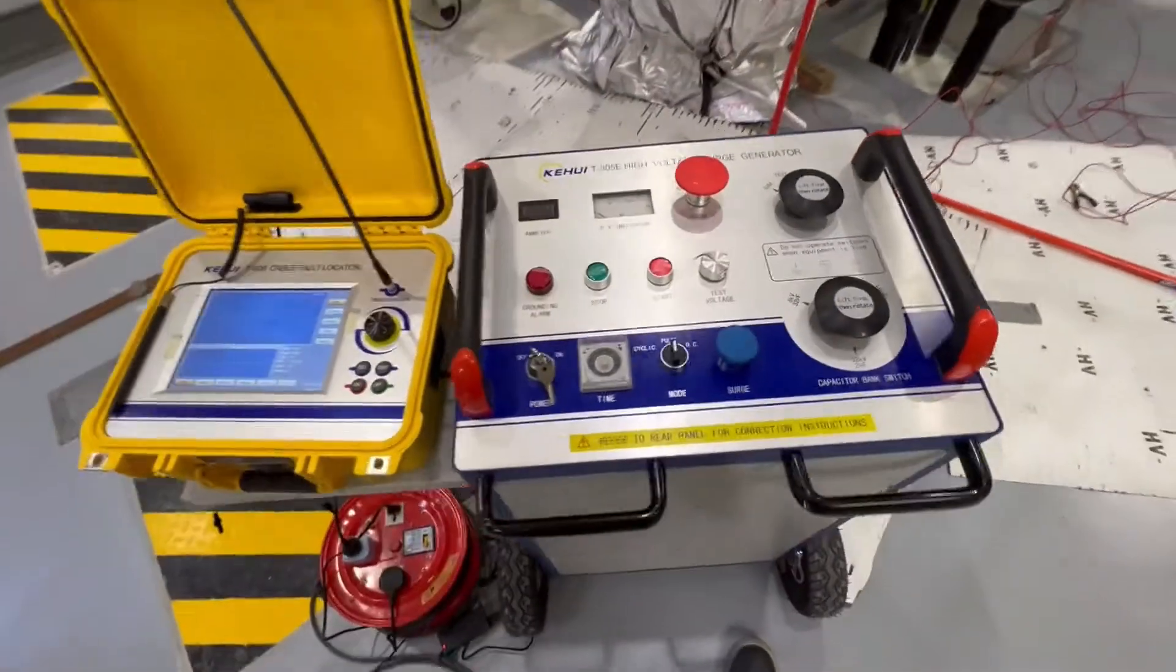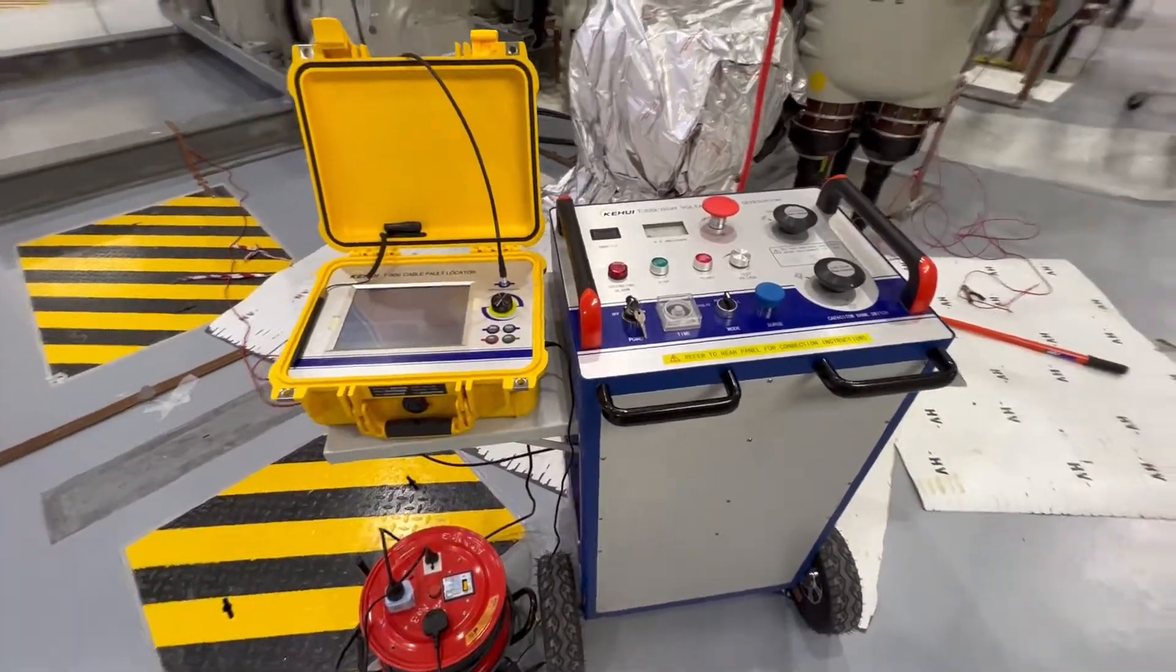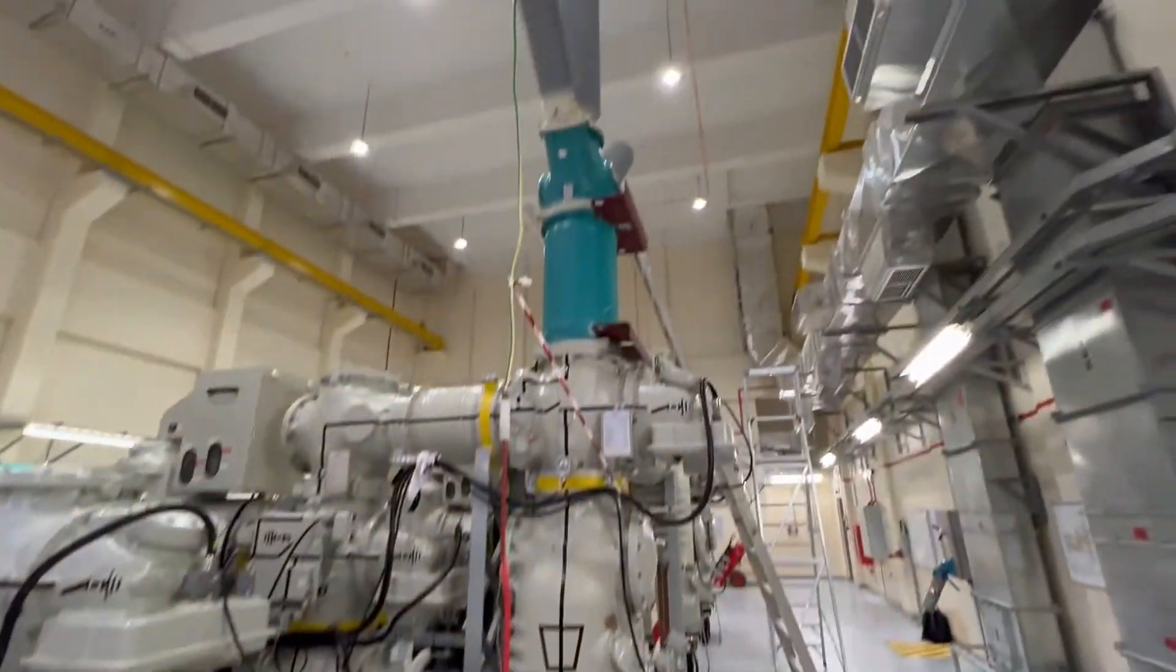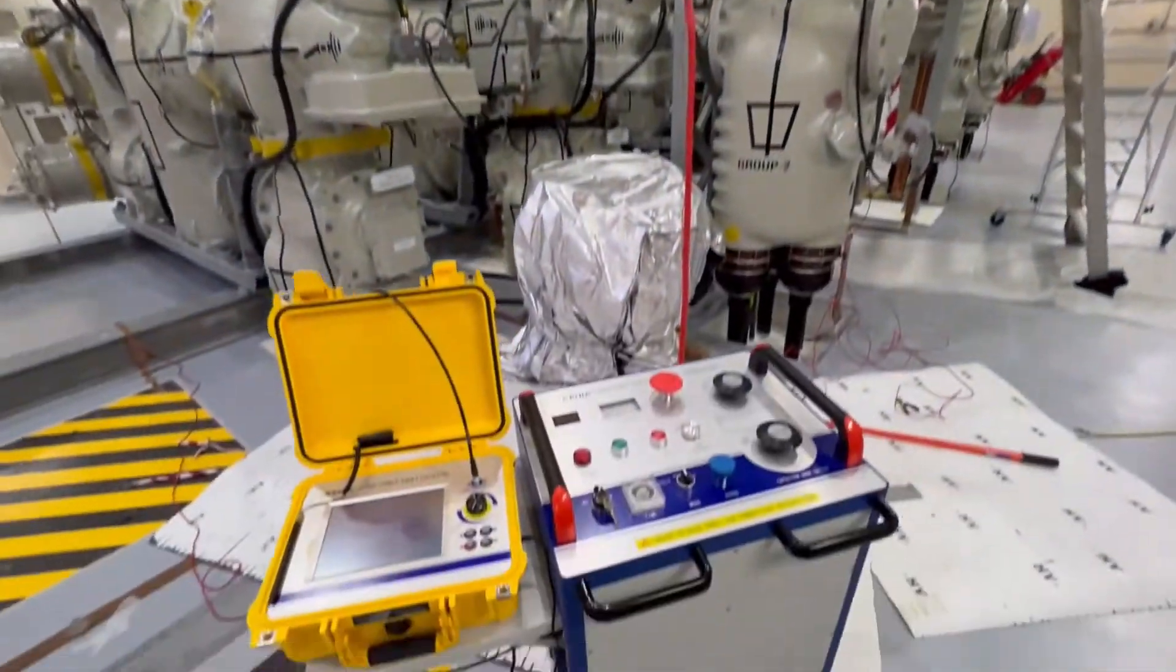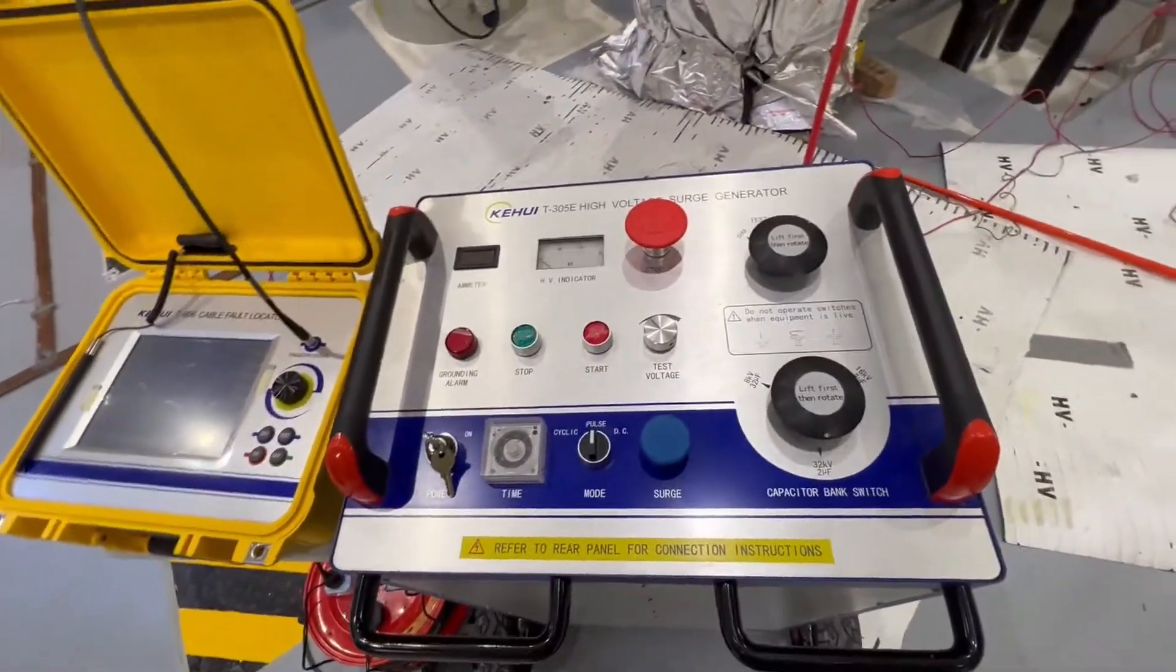Hi, this is Kihui cable fault location equipment. You are seeing that the surge generator is connected to the fault locator, and testing is going on for a 32 kV cable which is one kilometer or 1.1 kilometers, 100 meters long.